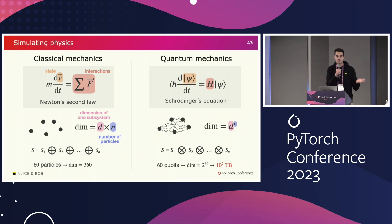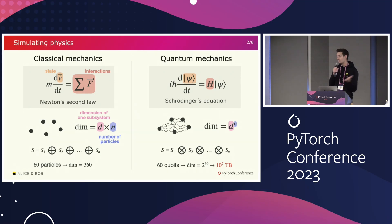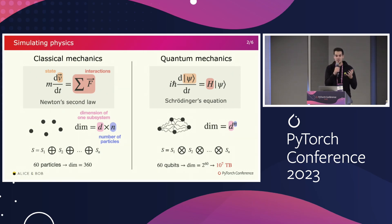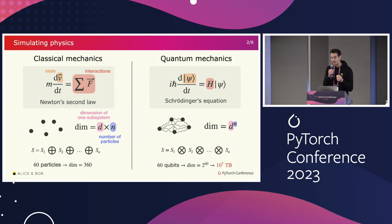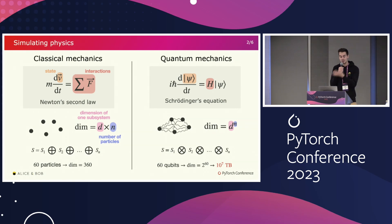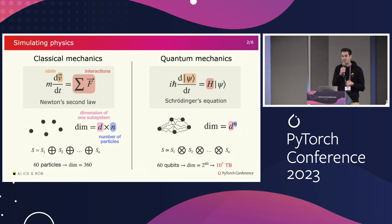To give you an order of magnitude: if you have 60 particles in classical mechanics, you typically have six variables for each particle — three for position, three for momentum — so you need to keep track of 360 values. If you have 60 qubits — qubits are the most basic quantum physical system, they are two-level systems — you need to keep track of 2 to the power of 60 values, which is roughly 10 to the 7 terabytes. And if you add one qubit, you need to double the size of the machine. This is really why Feynman said we need a new machine.